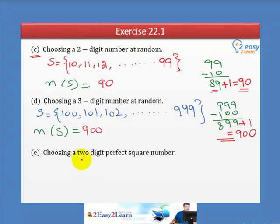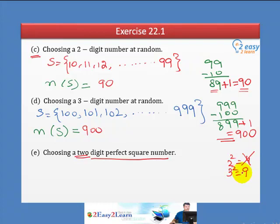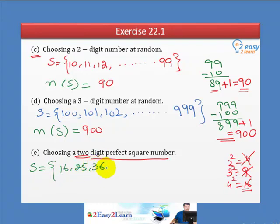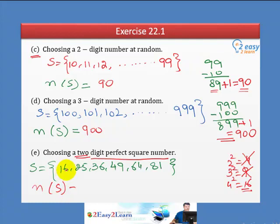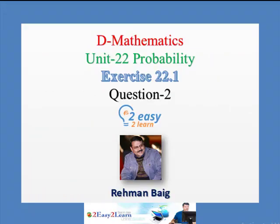Part E: Choosing two-digit perfect square numbers. Two squared is 4 — single digit, not selected. Three squared is 9 — single digit, not selected. Four squared is 16 ✓, five squared is 25 ✓, six squared is 36 ✓, seven squared is 49 ✓, eight squared is 64 ✓, nine squared is 81 ✓. Ten squared is 100 — three digits, not selected. So the total number of elements in the sample space is 6.